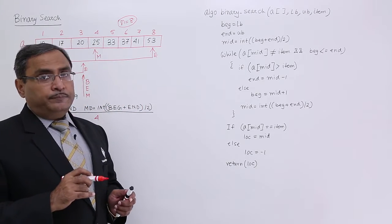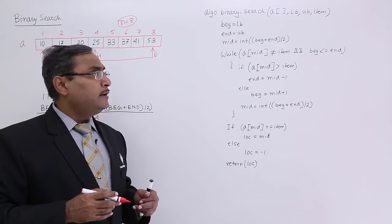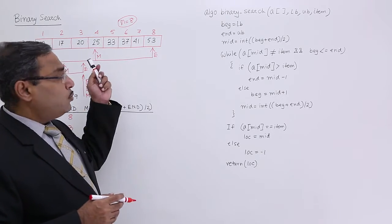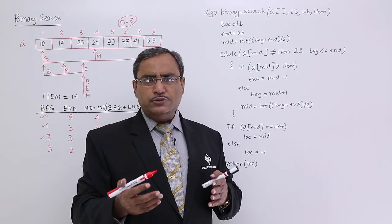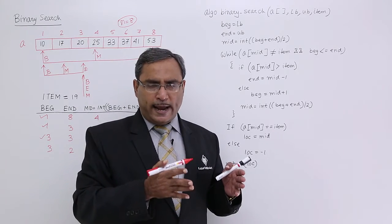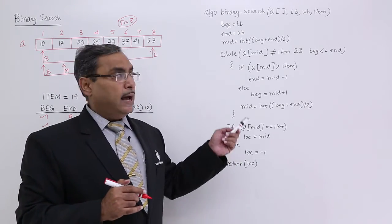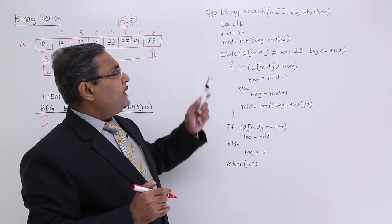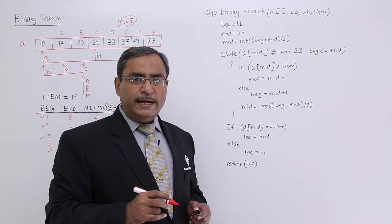Now, this is the algorithm. Algorithm binary search takes some input arguments: the first is the array name A, next is the lower bound, next is the upper bound, and the last is the item. Here I have considered lower bound equal to 1 and upper bound equal to 8. But I can take them from the user's input because in C or Java programming, the lower bound for an array is by default 0. So to make the algorithm flexible, I have considered lower bound and upper bound as input arguments. So: beg equals lower bound, end equals upper bound, mid equals integer of (beg plus end) divided by 2.